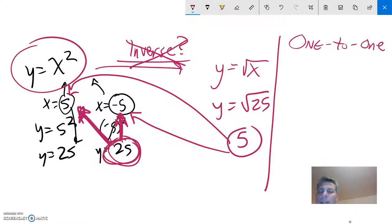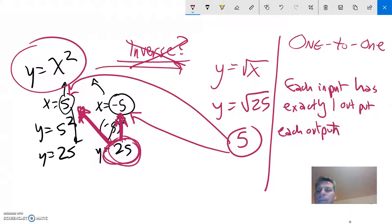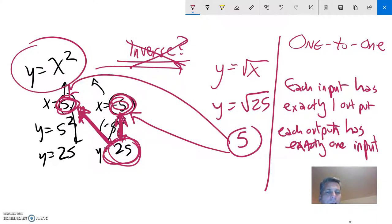And what one-to-one means is every single input has exactly one output, and the other way as well. Each output has exactly one input. So notice x squared is not one-to-one because 5 and negative 5 go to 1. This is, you can think of this as 2-to-1. There's two things that go to this one thing. In order to be one-to-one, if I plug in a 5, I'm only going to get one answer. And that answer only came from 5. 1-to-1.